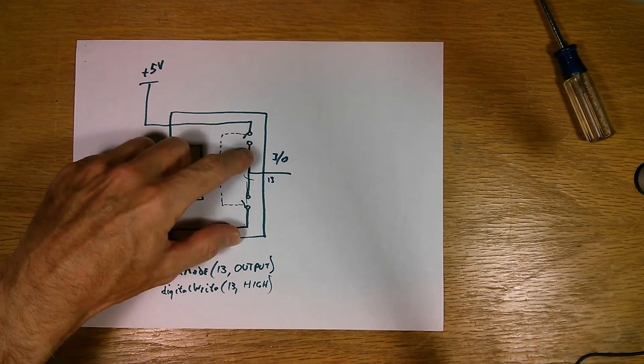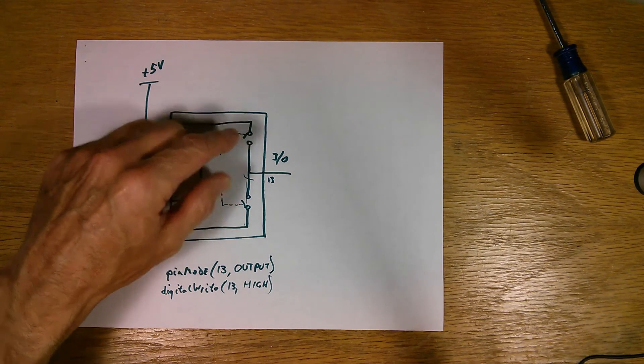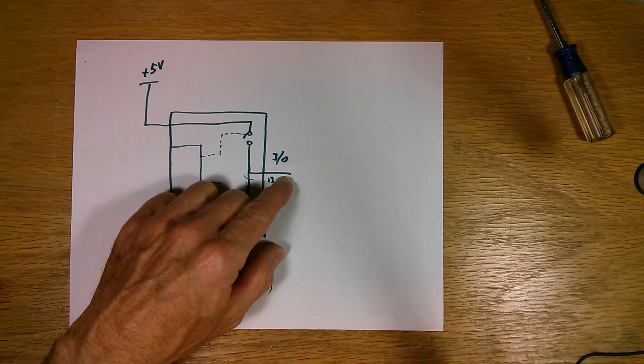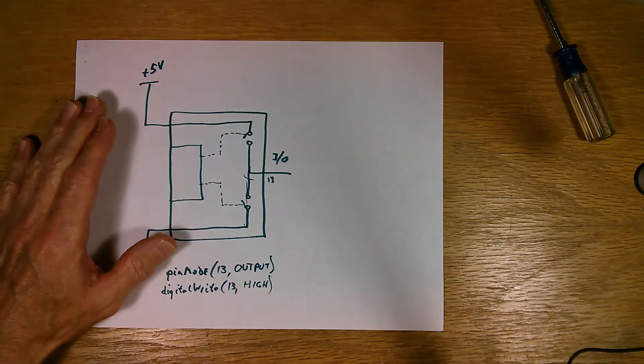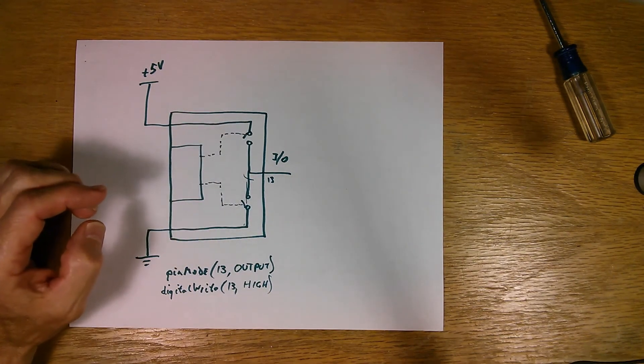As more current flows through the resistance of the switch, the greater the voltage across that switch. And so less voltage appears at the output here. And the reason why the switch would fail is that it gets hot because you've got power dissipated in that resistor.